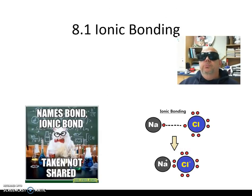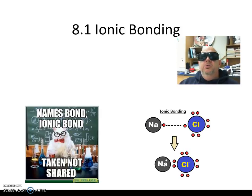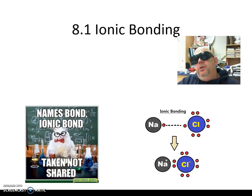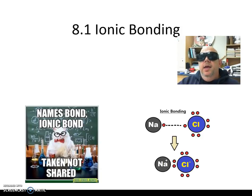If we look at bonding, there are different kinds. We have ionic bonding, we have covalent bonding, and we have metallic bonding. We're going to deal more with ionic and covalent here. There is also hydrogen bonding, but really that falls under the category of covalent bonding.